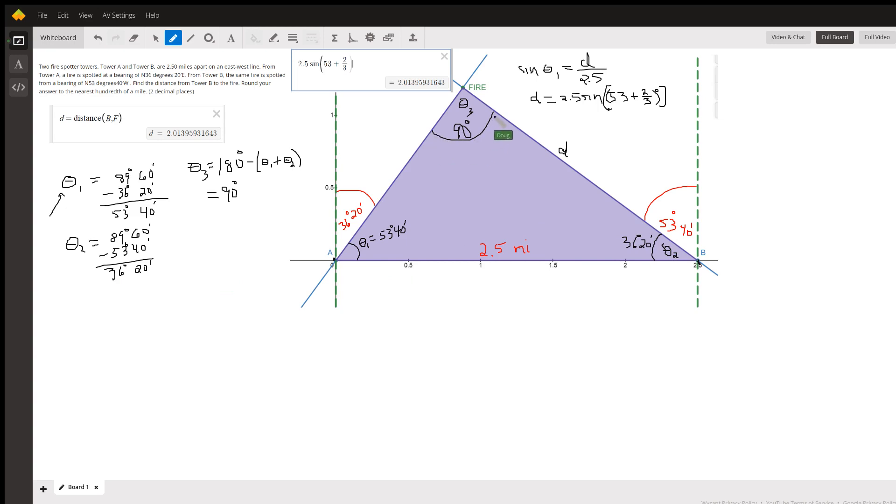And then to get this angle, surprisingly these two add up to 90 so they're complementary, which means that this is actually a right angle.